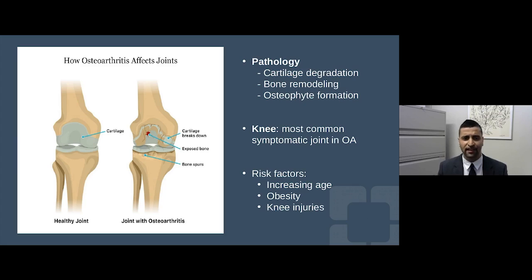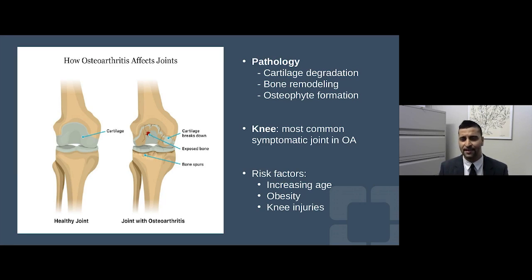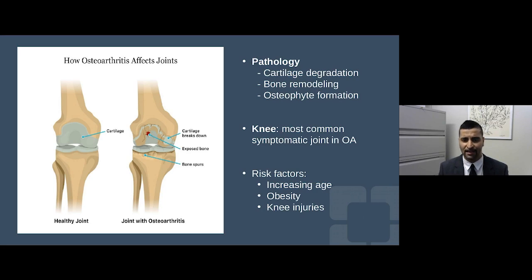Osteoarthritis is really a disease of the cartilage. Over time, cartilage breaks down and the body adapts to years of biomechanical stress and joint loading through bone remodeling, significantly forming bone spurs or osteophytes. Some patients come in with hand osteoarthritis with big bony bumps over their knuckles — that can certainly happen in osteoarthritis.